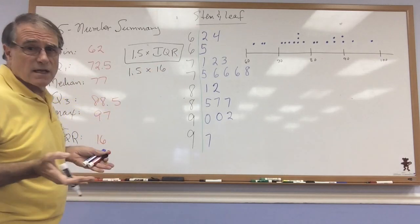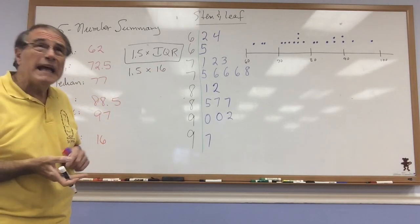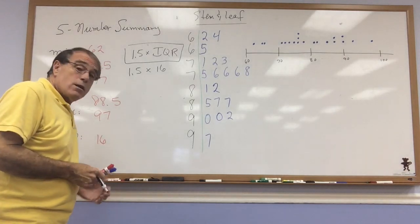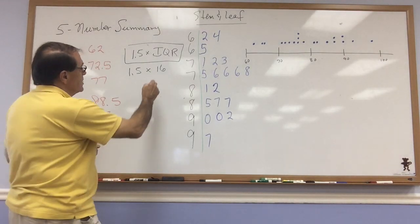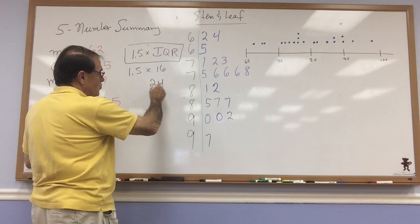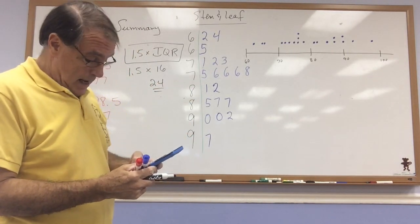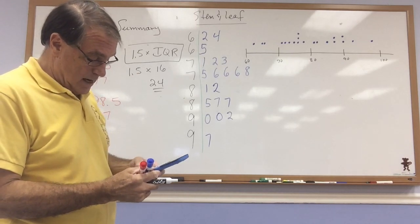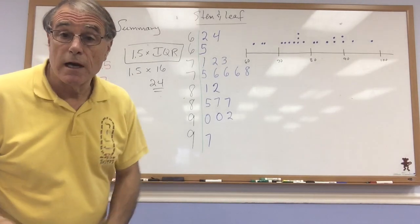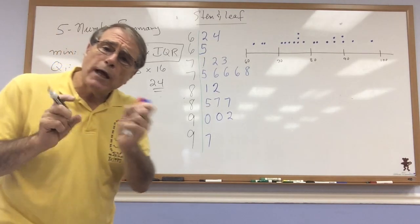So that would be 1.5 times 16. Well, 1 times 16 is 16. Half of that would be 8. 16 and 8 should be 24. So this number should be 24. Let me just double check. I'll take my calculator. And 1.5 times 16 is, sure enough, 24.